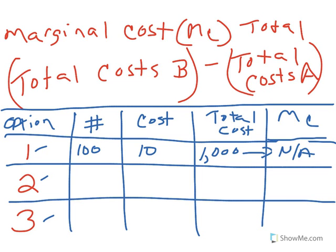So let's look at option two. Option two doubles the production run to 200 units and halves the cost per unit, giving a total cost of $1,000.